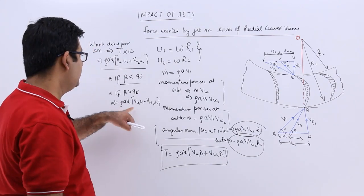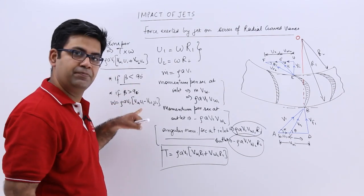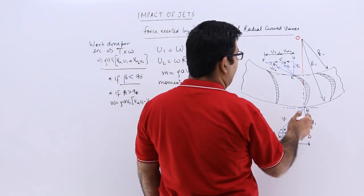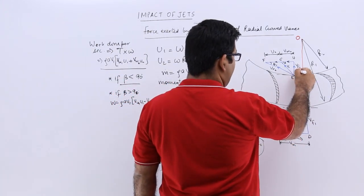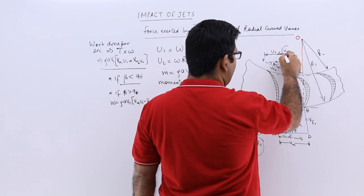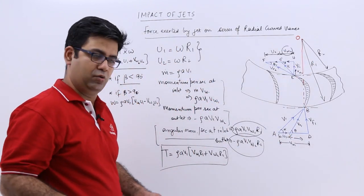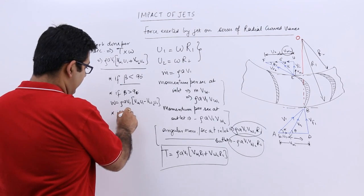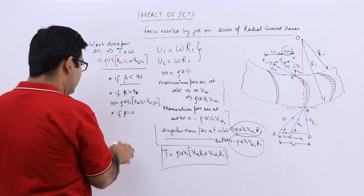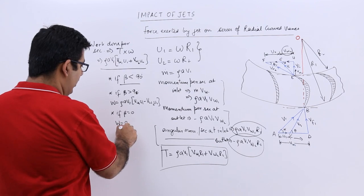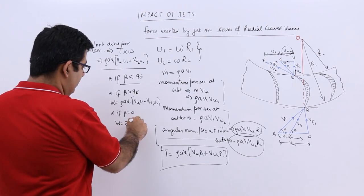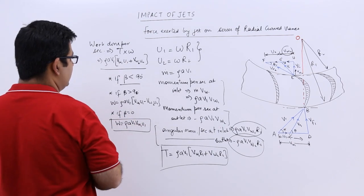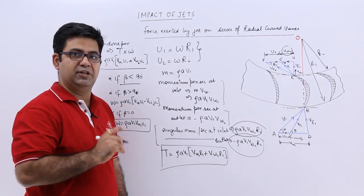There will be a minus over here. In general we can have plus minus. If it becomes radial, that is the outlet becomes radial, vw2 is 0. In that case, if beta is 0, that is radial outlet, you will have work done as ρAv1vw1u1. That is the work done per second on this arrangement.